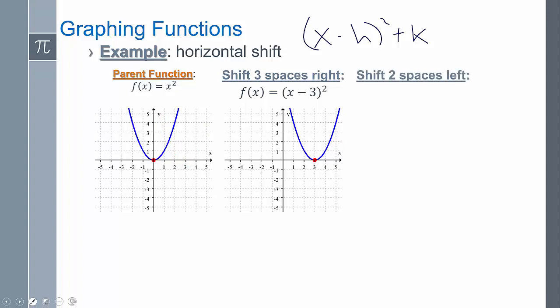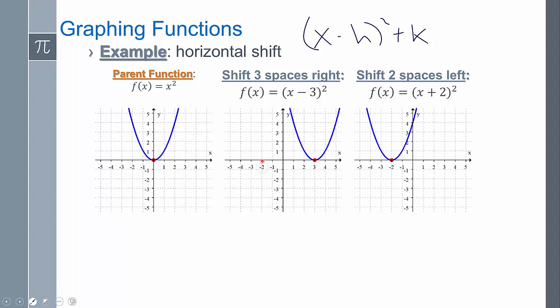What if I wanted to shift it two spaces to the left? That means my h is negative two. The opposite of negative two is positive two. It's starting here at (0, 0), going to shift over two spaces this way, and that's how we can visualize it.